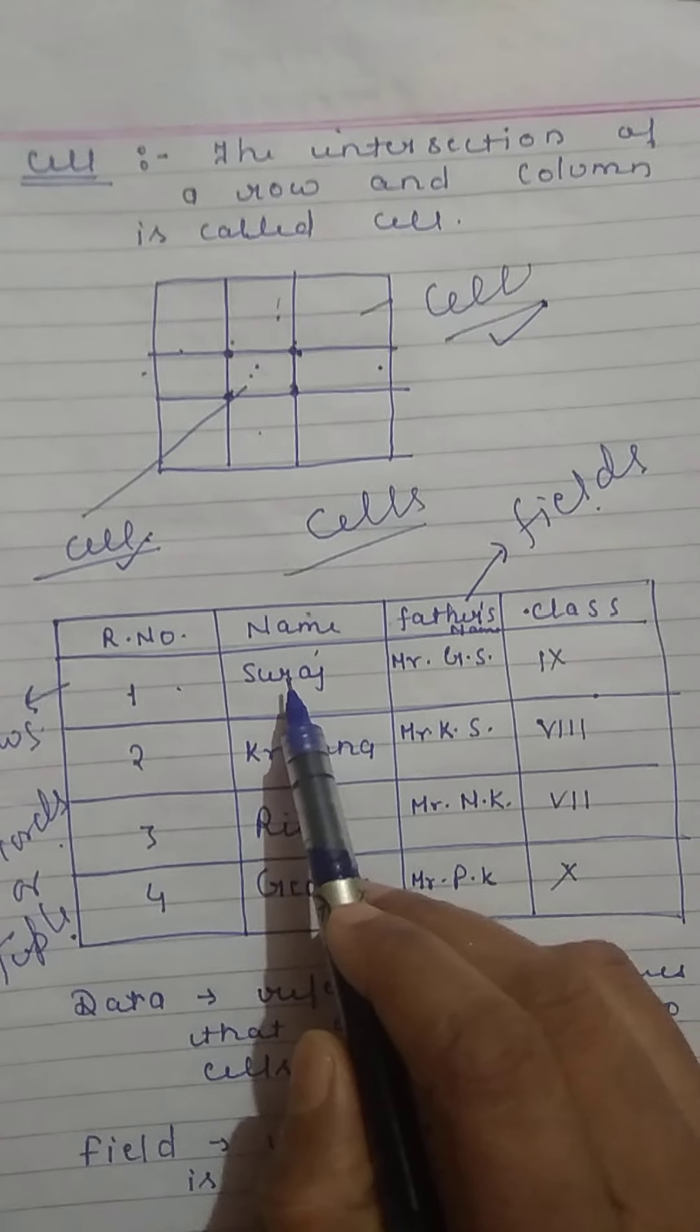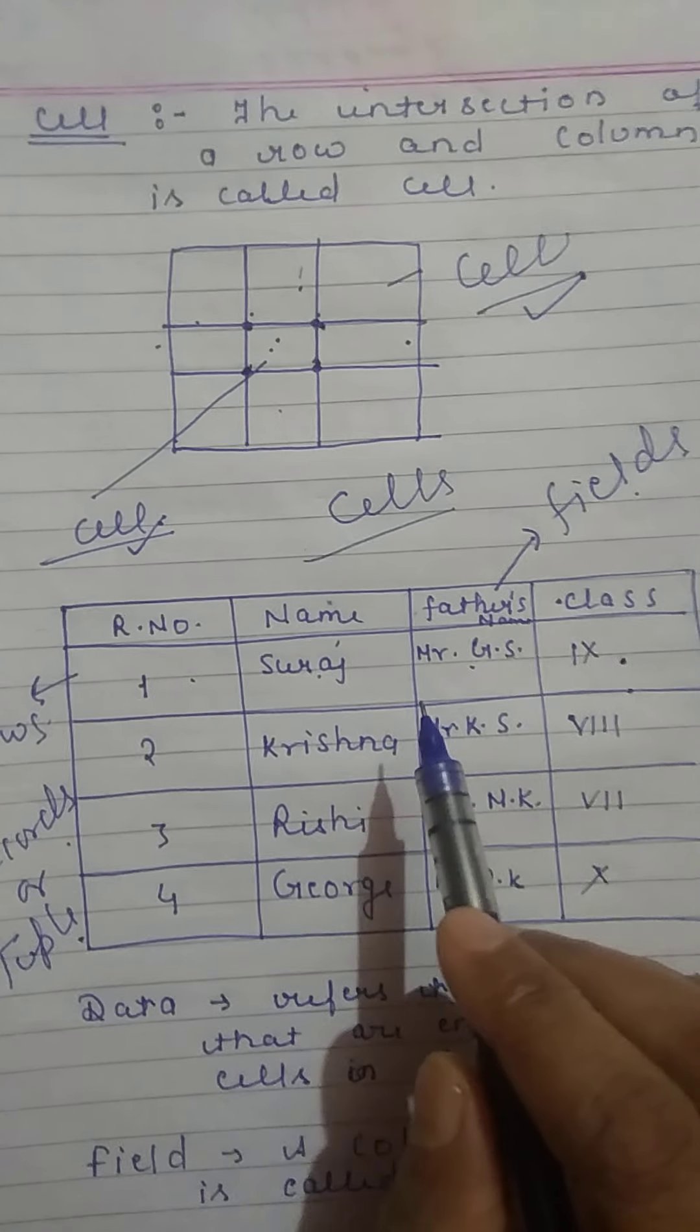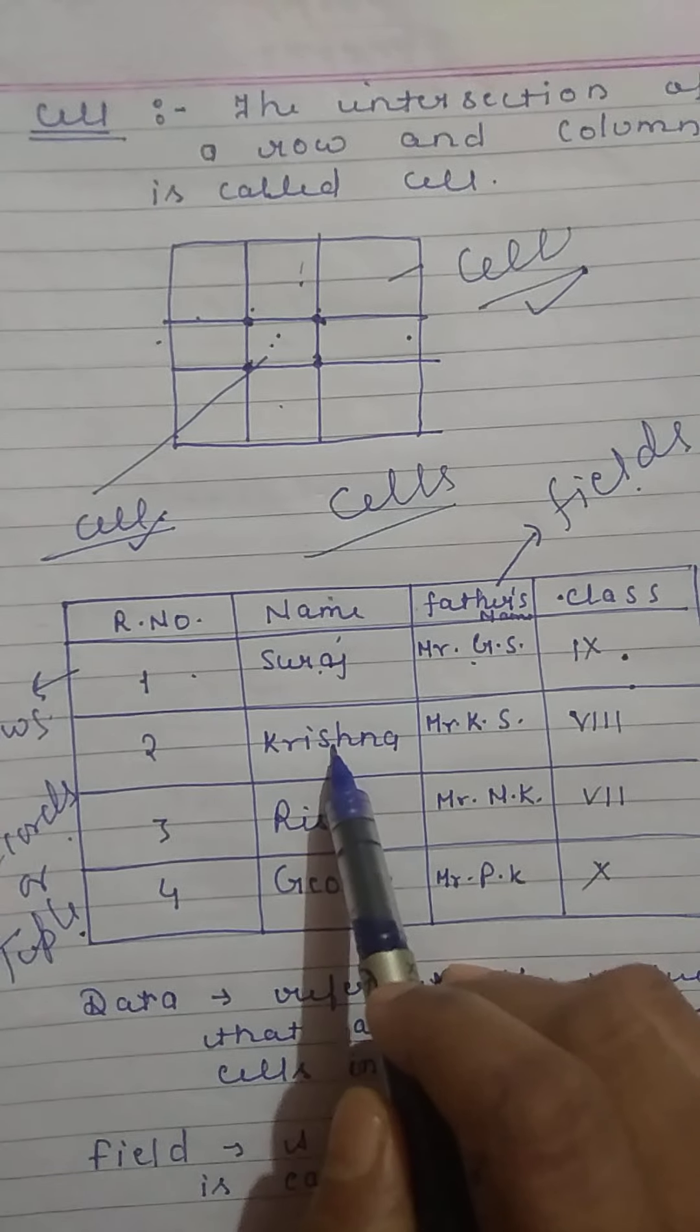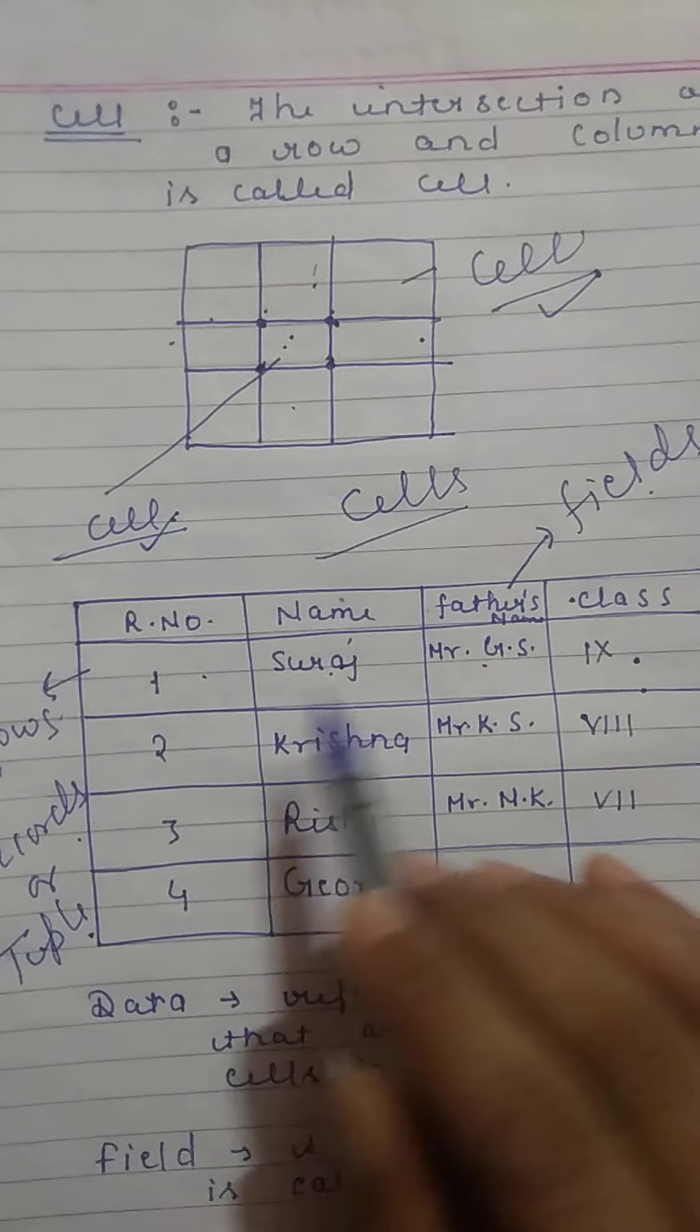Each value that we enter in the cell is called data. For example, Suraj, Krishna, all these are data that we have entered in the cells.